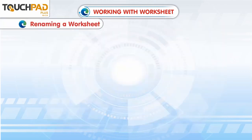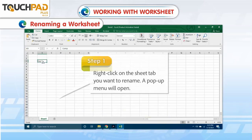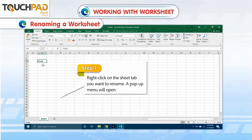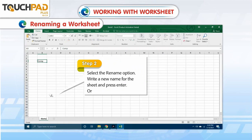Renaming a Worksheet. To rename a worksheet, follow the given steps. Step 1: Right-click on the Sheet tab you want to rename. A pop-up menu will open. Step 2: Select the Rename option. Write a new name for the sheet and press Enter.